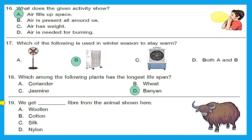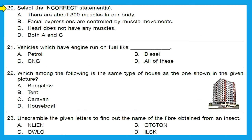Question 19: we get dash fiber from the animal shown here. The animal shown in the figure is a yak. Animals like yak and sheep give us woolen fibers, which are used to make warm woolen clothes. So option A, woolen, is the right answer because that is what we get from a yak.